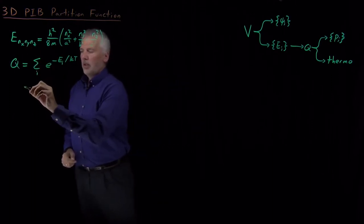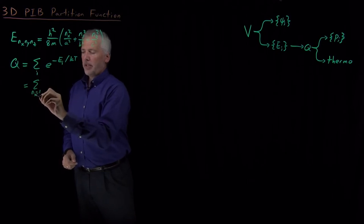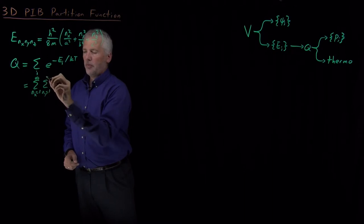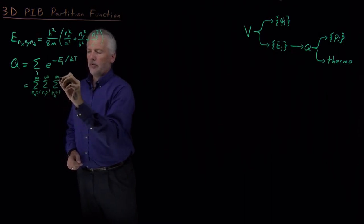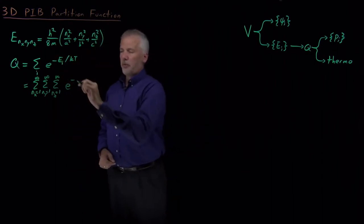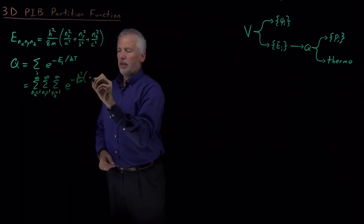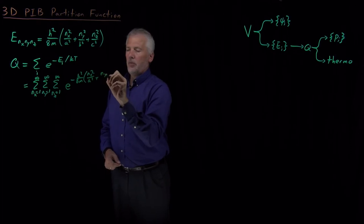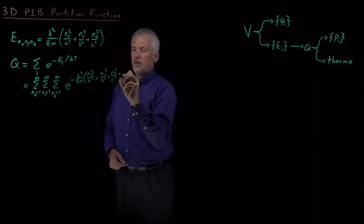So we need to know what is the sum. n sub x can be any value from one to infinity, n sub y can be any value from one to infinity, n sub z can be any value from one to infinity, and then the energy is this expression, so if I put that in for the energy, e to the minus h squared over 8m, nx squared over a squared, ny squared over b squared, and nz squared over c squared.